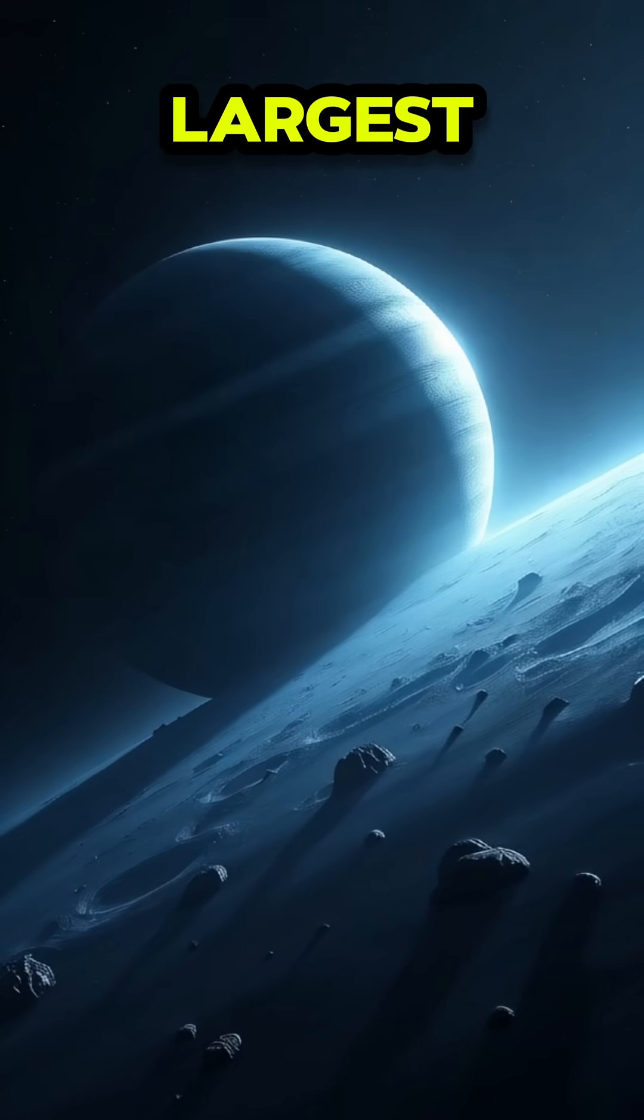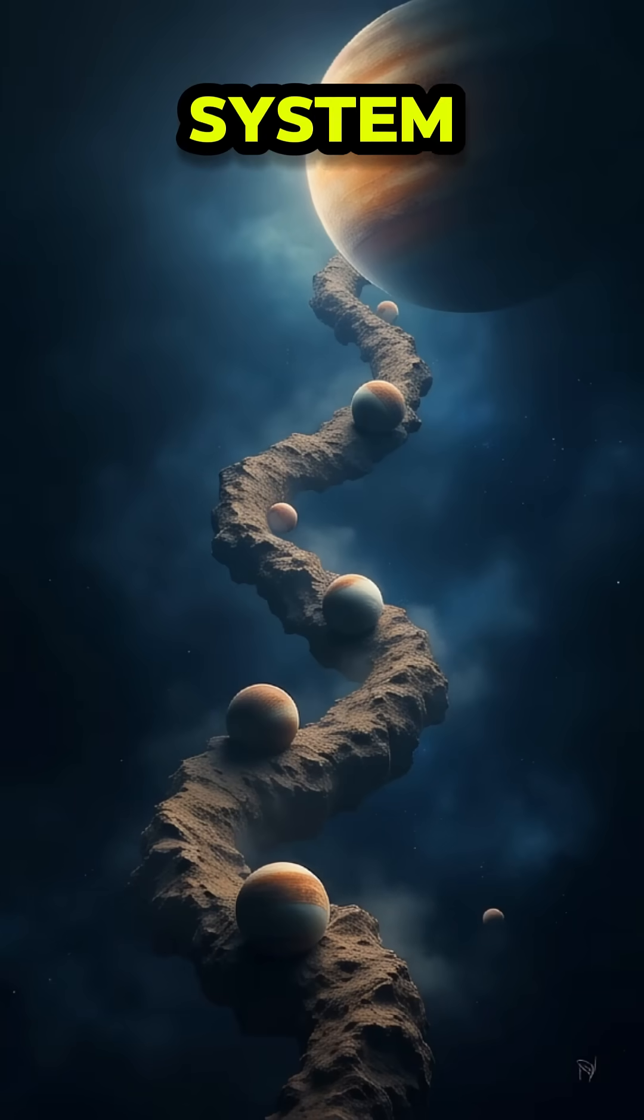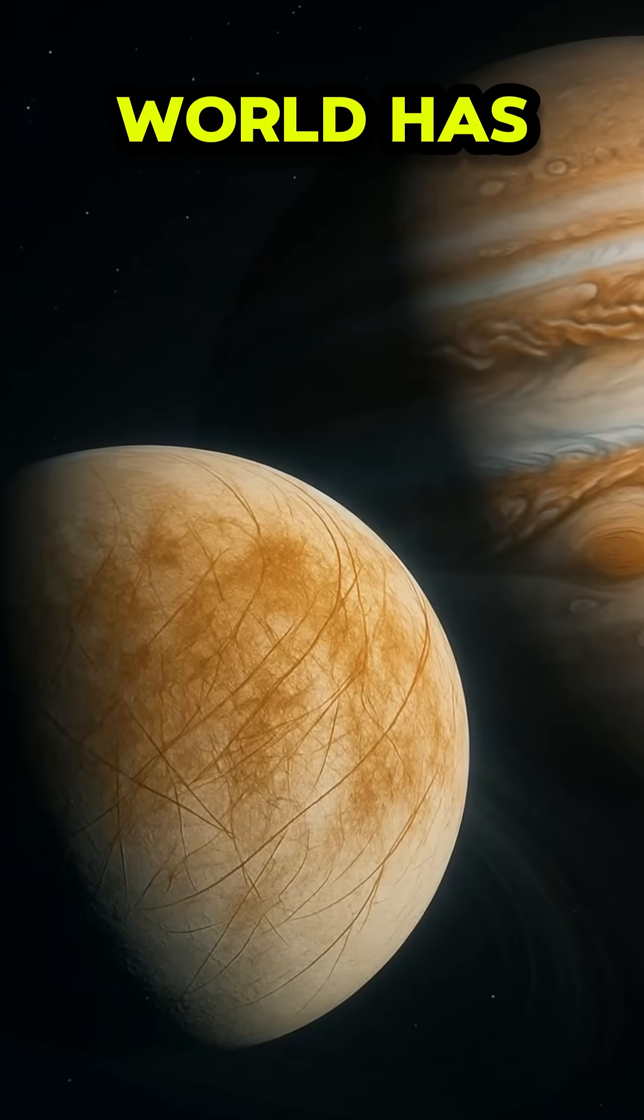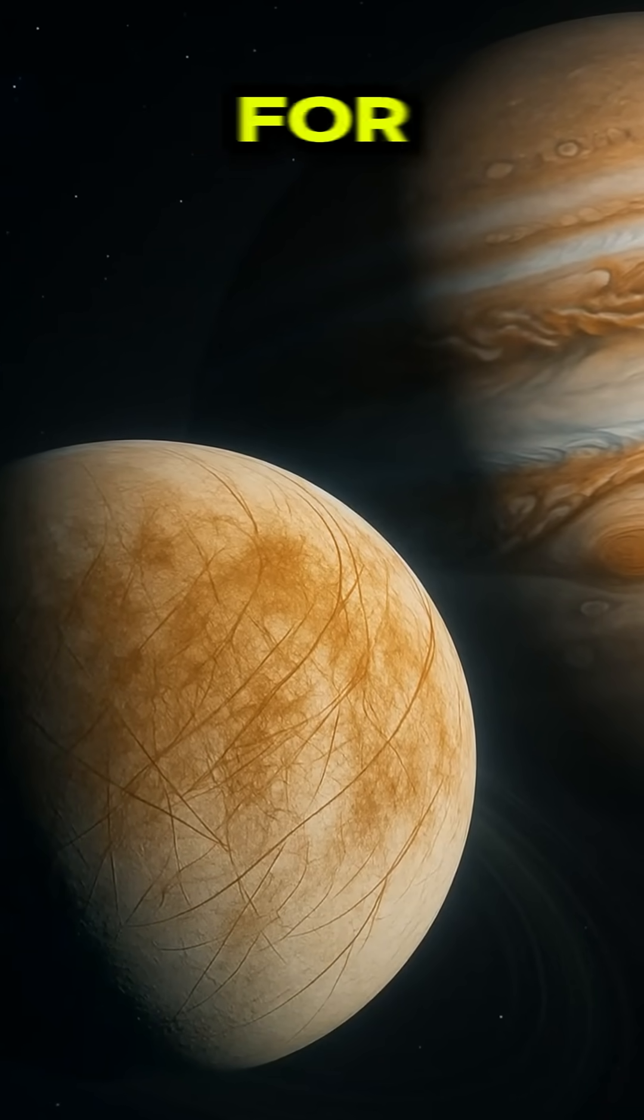Europa is one of Jupiter's largest moons and the sixth largest moon in the solar system. Discovered in 1610 by Galileo Galilei, this icy world has been the subject of fascination for centuries.